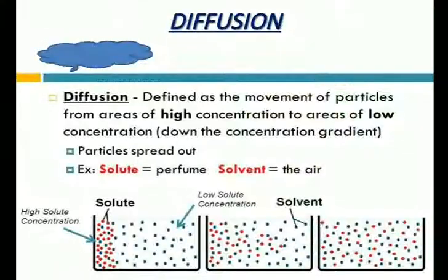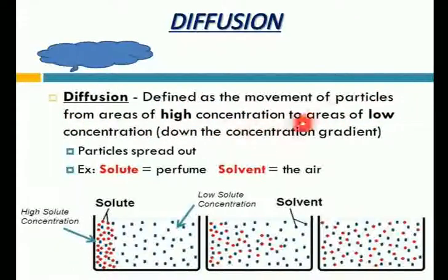Movement by diffusion is passive and may occur from one part of a cell to another, from cell to cell, or over short distances — such as from the intercellular spaces of the leaf to the outside. No energy expenditure is required because it is a passive process. In diffusion, molecules move in a random fashion, with the net result being movement from a region of higher concentration to lower concentration — down the concentration gradient.